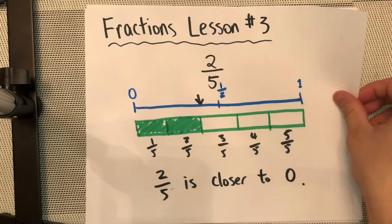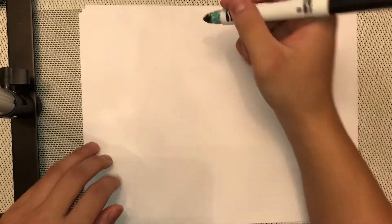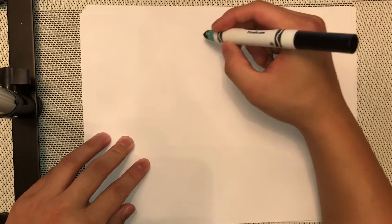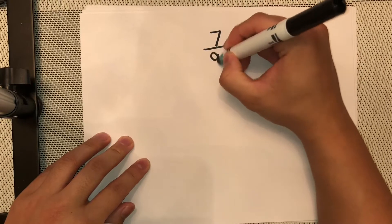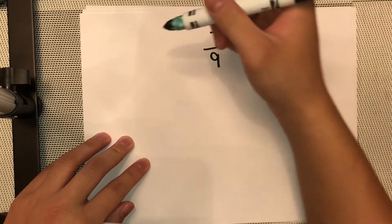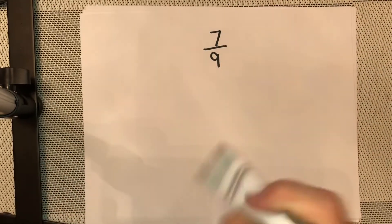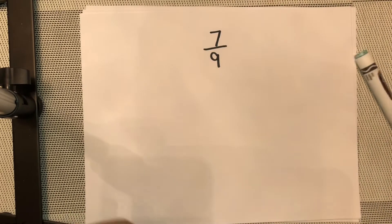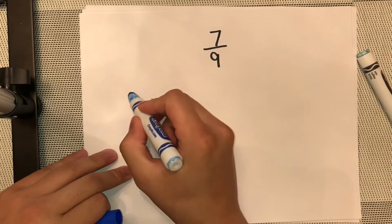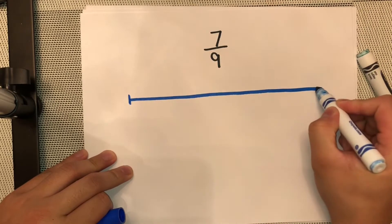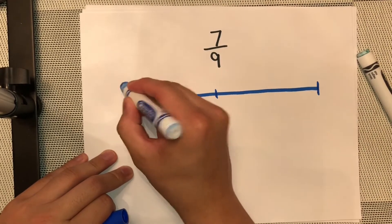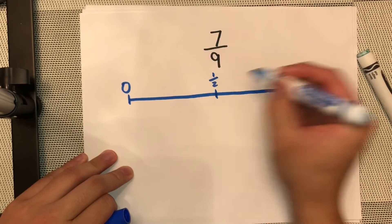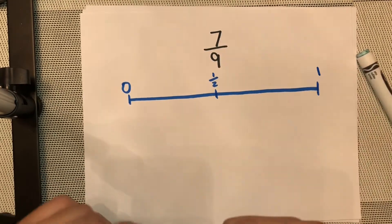Okay, let's look at another one. Let's try: is seven ninths closer to 0 or closer to 1? I'll draw my number line here and mark my benchmarks — it's always 0, half, and 1 for this part.